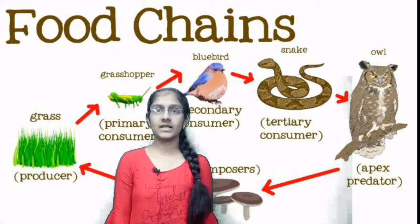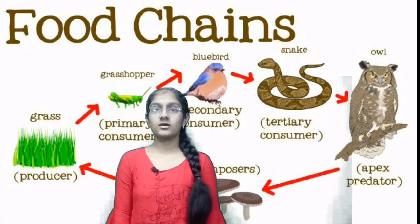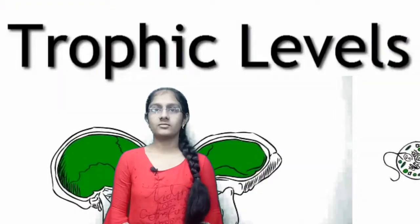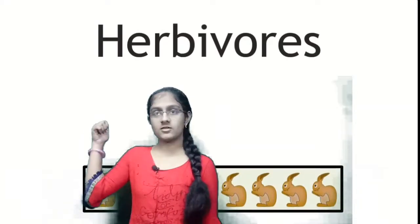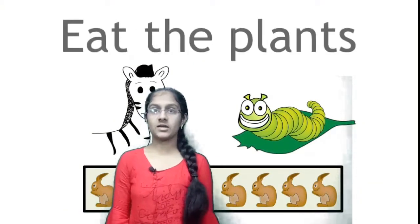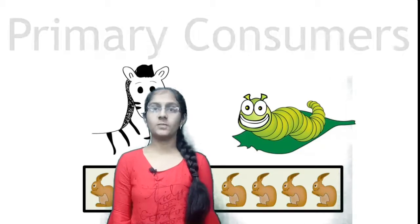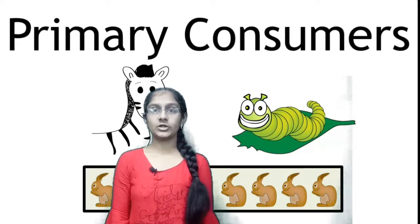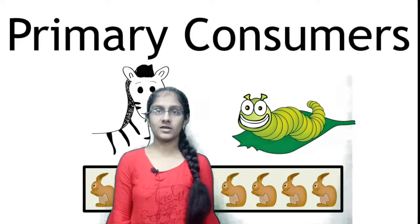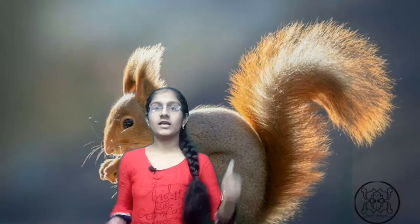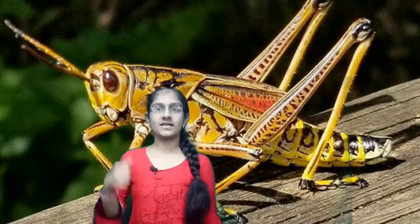I will teach you the topic name: primary consumer. We will see the topic level, types, and examples. First, we learn about the primary consumer. The type of primary consumer is the herbivores, which depends upon the producer. Examples of primary consumer: squirrel, elephant, grasshopper, etc.